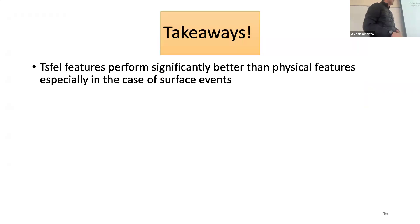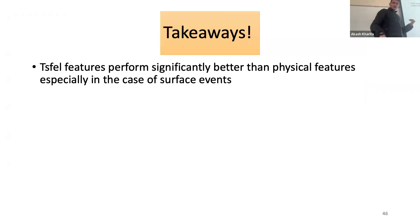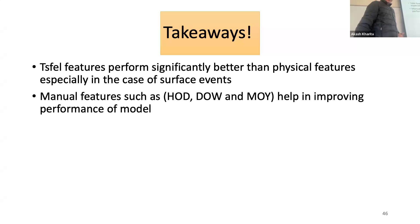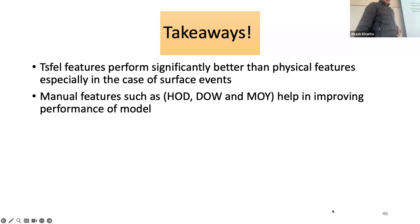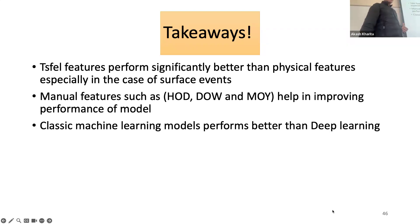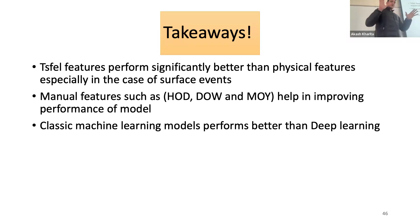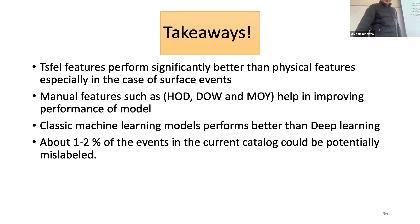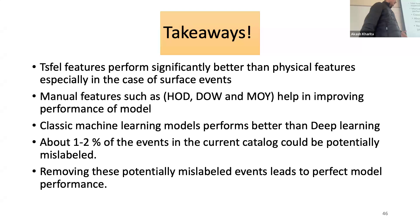Main takeaways: TSFPL features perform significantly better than physical features, especially for surface events. Manual features such as hour of the day, day of the week, and month of the year help improve model performance. Classic machine learning models performed better than the deep learning models I explored — I'm not saying deep learning is worse, it's just based on what I've explored. About 1–2% of events in the current catalog could be potentially mislabeled, and removing these potentially mislabeled events leads to perfect model performance.